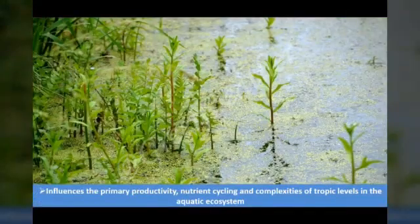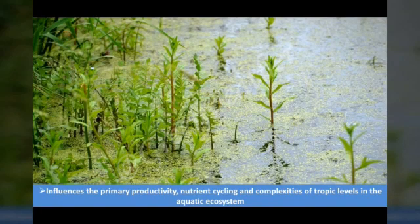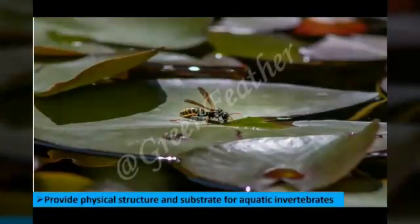The diversity and biomass of aquatic macrophytes influences primary productivity, nutrient cycling, and complexities of trophic levels in the aquatic ecosystem, therefore playing a vibrant role in the structure, functioning, and framing of the aquatic environment. They provide physical structure and substrate for aquatic invertebrates and harbor aquatic insects which serve as food for fishes.